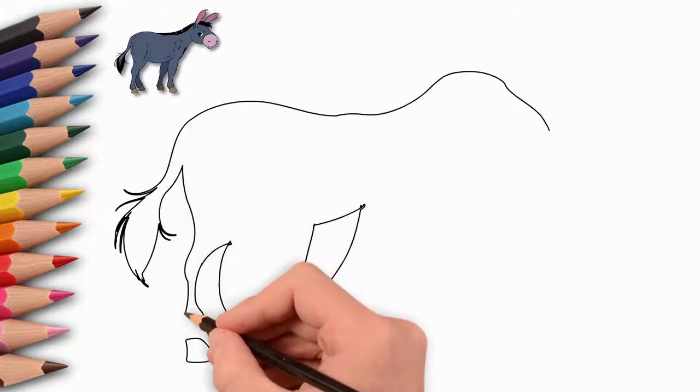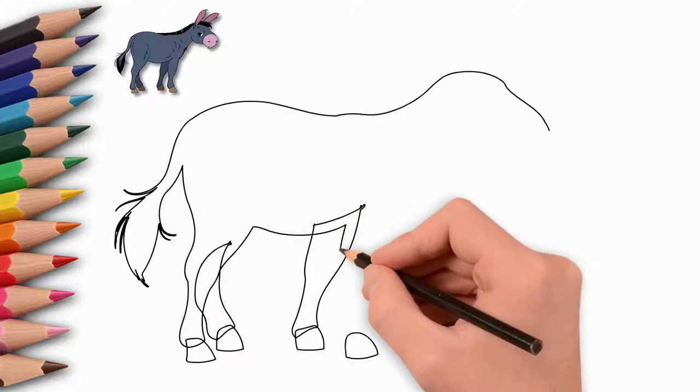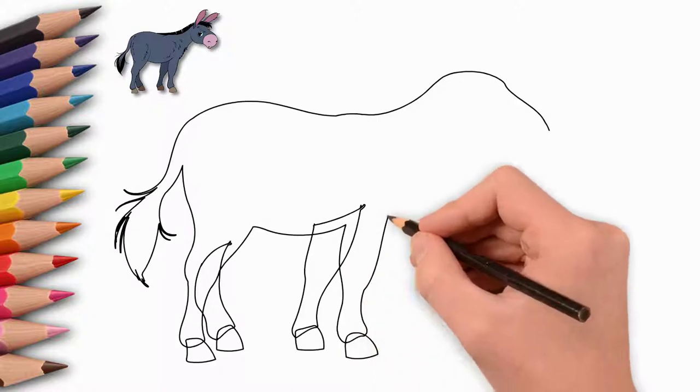And on his feet is the body of a donkey. We draw a trunk. Draw the neck and head of a donkey.